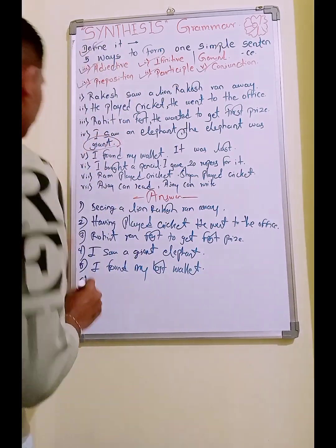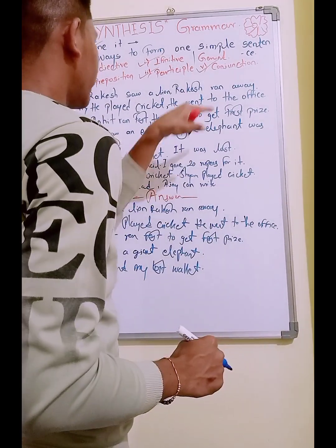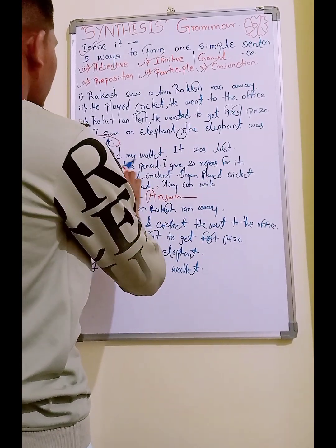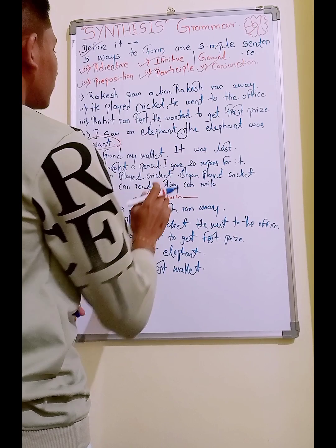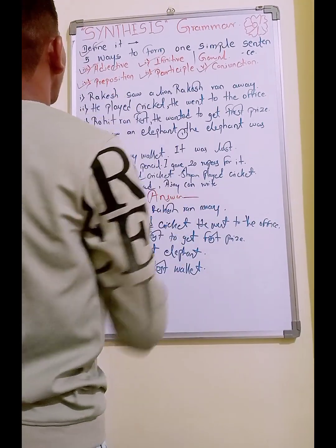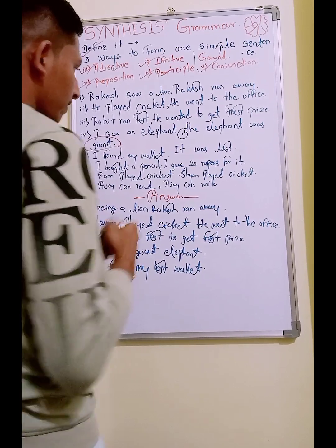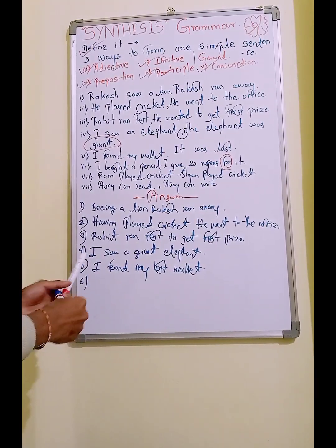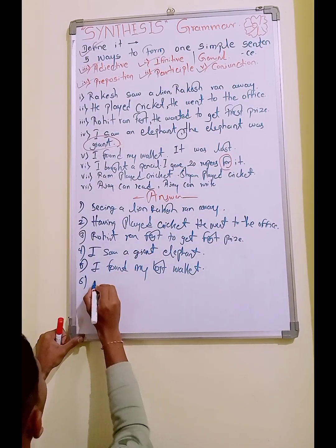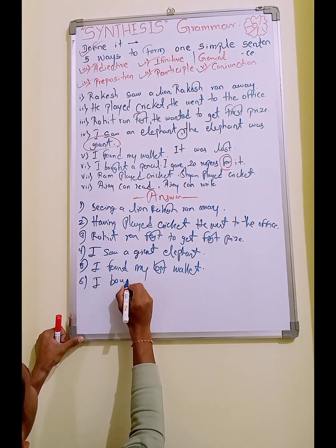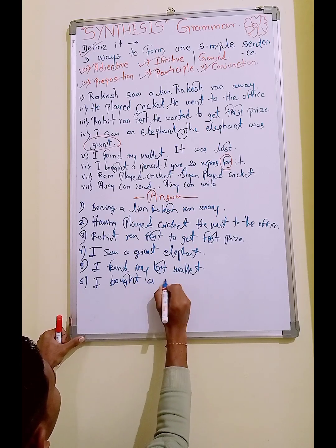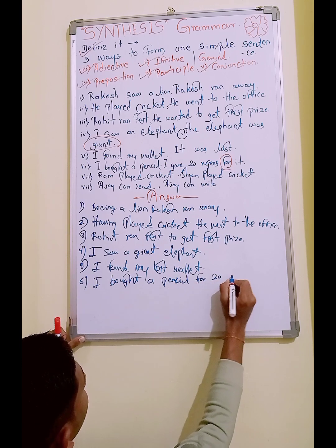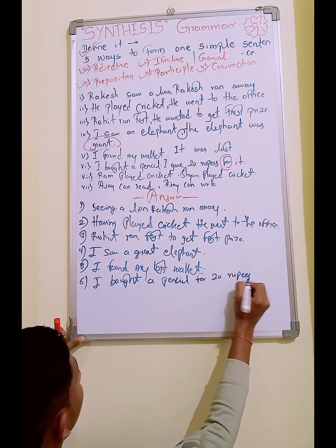Sixth one: 'I bought a pencil. I gave 20 rupees for it.' This is a very long one — you can cut it short. The preposition 'for' can replace the whole second sentence and frame a new one. The answer is: 'I bought a pencil for 20 rupees.'